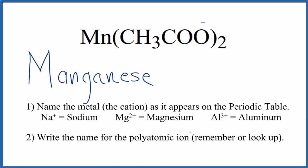Then we'll write the name for the polyatomic ion. You either remember that CH3COO1- is the acetate ion, or if you're allowed, you look it up. So we're going to write the acetate ion.